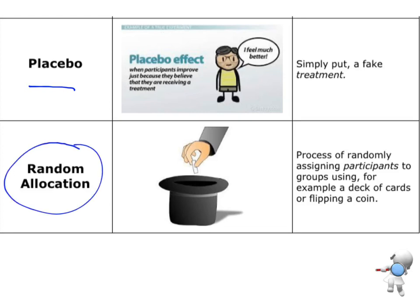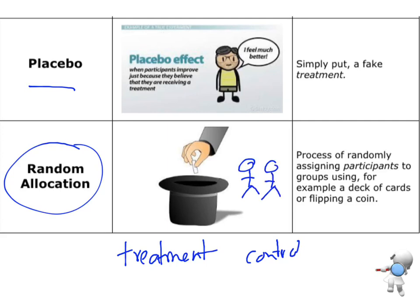Random allocation. As the picture shows, we want to choose which participants go in which group. We have our treatment group and our control group, and we want to randomly allocate each participant into one of those two groups. We want to do it randomly — using names in a hat, rolling a dice, any of those kinds of things.